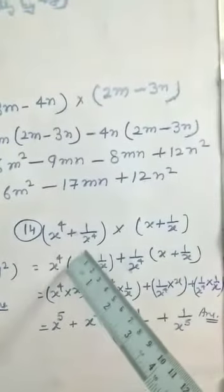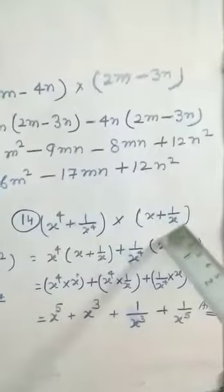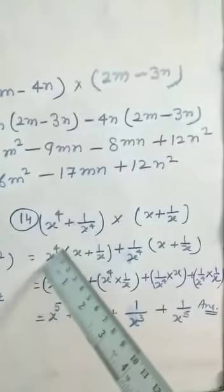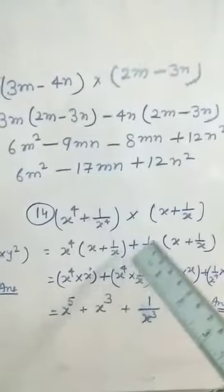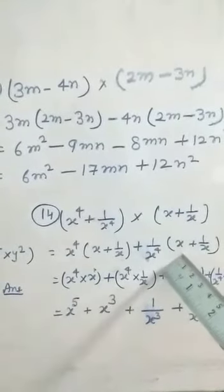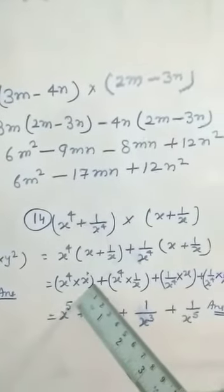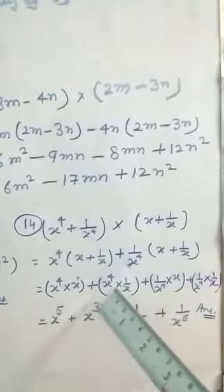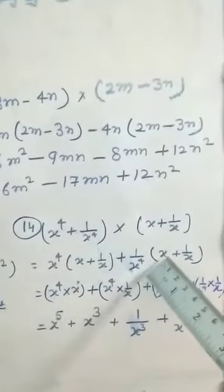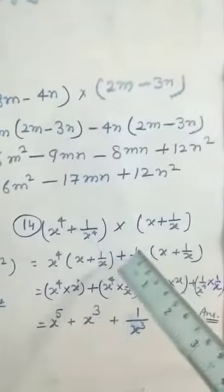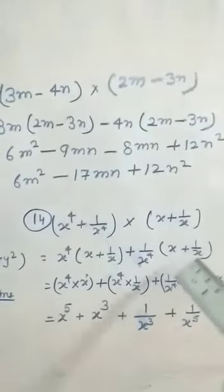x to the power 4 plus 1 over x to the power 4, multiplied by x plus 1 over x. Distribute: x to the power 4 multiplied by x plus 1 over x, and then 1 over x to the power 4 multiplied by x plus 1 over x. So: x to the power 4 times x, plus x to the power 4 times 1 over x, plus 1 over x to the power 4 times x, plus 1 over x to the power 4 times 1 over x.